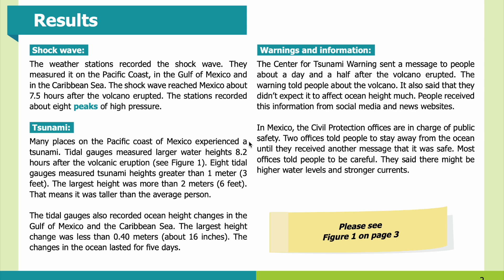Tsunami: Many places on the Pacific coast of Mexico experienced a tsunami. Tidal gauges measured larger water heights 8.2 hours after the volcanic eruption. Eight tidal gauges measured tsunami heights greater than one meter, or three feet. The largest height was more than two meters, or six feet — taller than the average person. The tidal gauges also recorded ocean height changes in the Gulf of Mexico and the Caribbean Sea. The largest height change there was less than 0.4 meters, about 16 inches. The changes in the ocean lasted for five days.